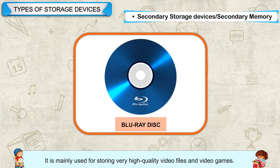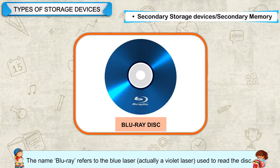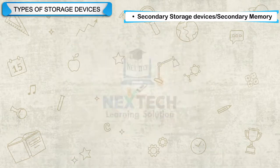Blu-ray Disk: It is mainly used for storing very high quality video files and video games. Its storage capacity is very high — it can store up to 125 GB of data. The name Blu-ray refers to the blue laser, actually a violet laser, used to read the disk.